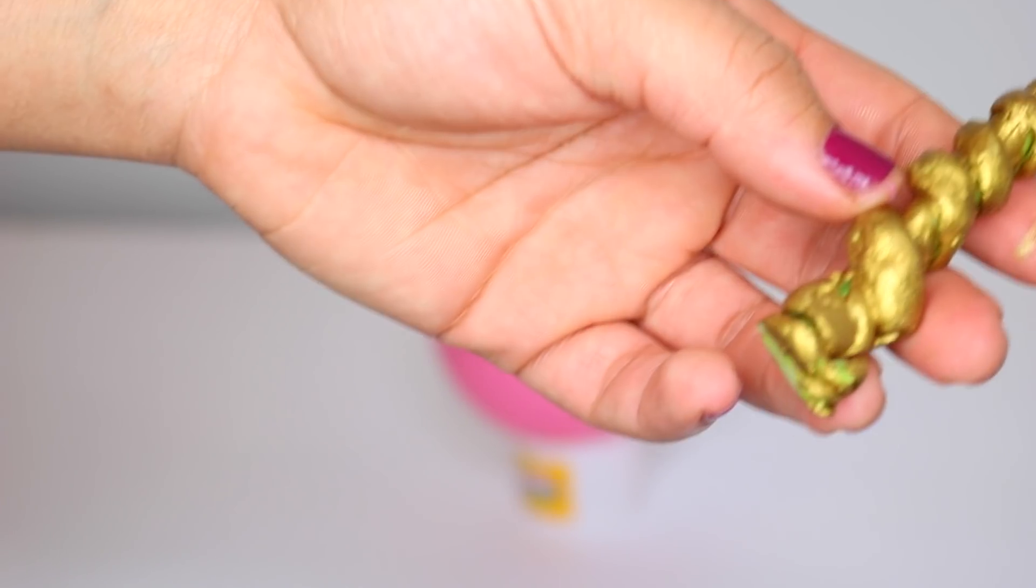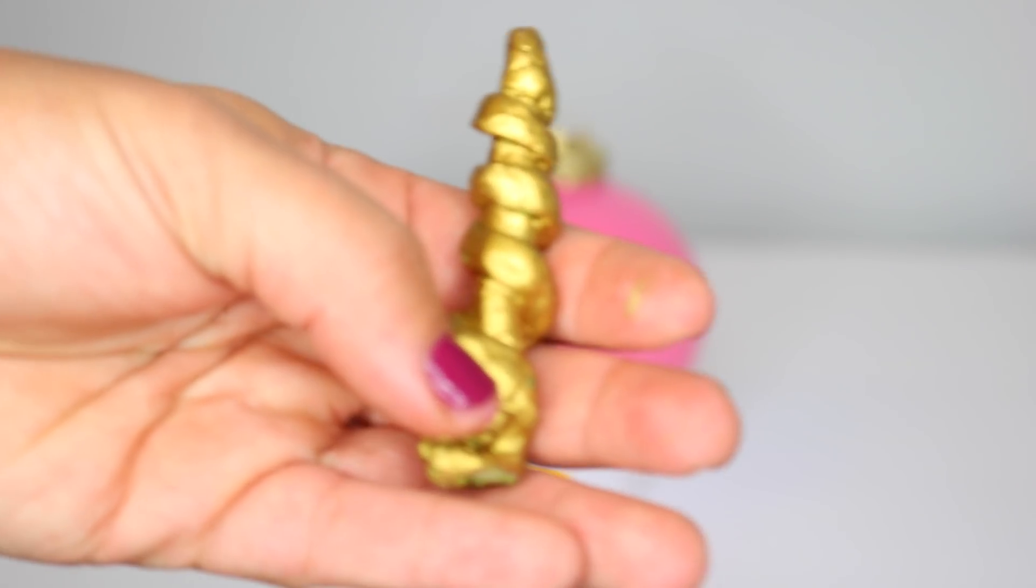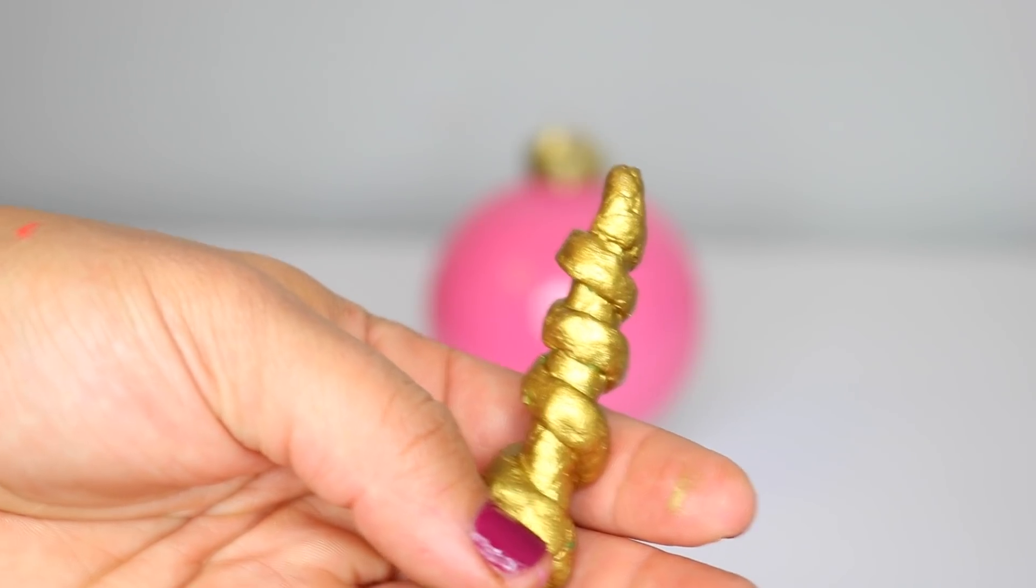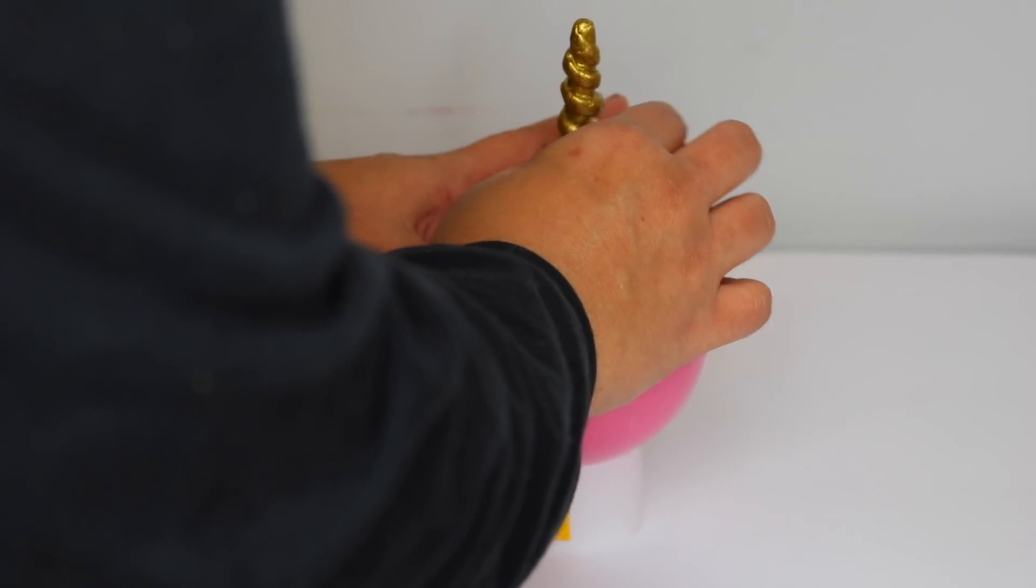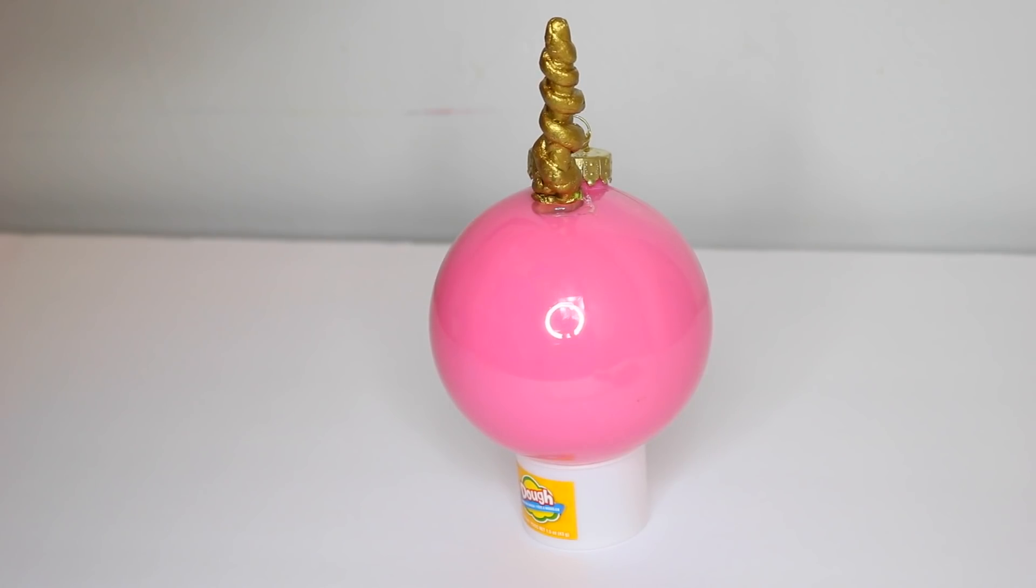So for the horn of the unicorn I just used regular play-doh from the Dollar Tree. I used it in the yellow color. I did the base of it first and then I took another piece and just wrapped it around to give it that spiral effect. Once it was dry - I left it out for like an entire day - and then I gave it a coat of gold acrylic paint. This ended up working okay, it does kind of look lumpy and bumpy.